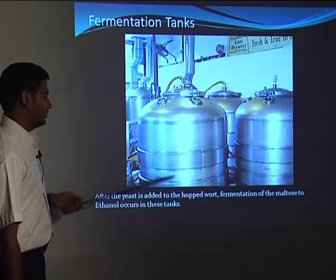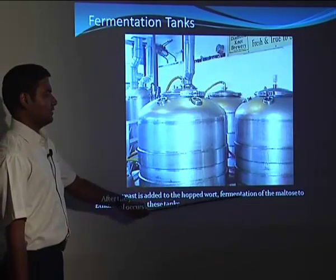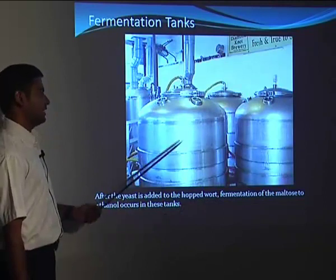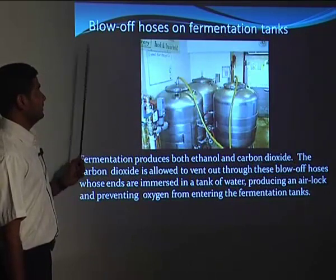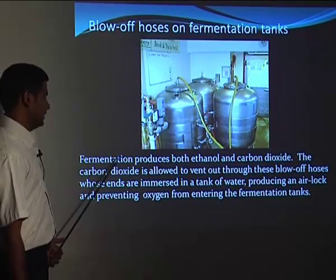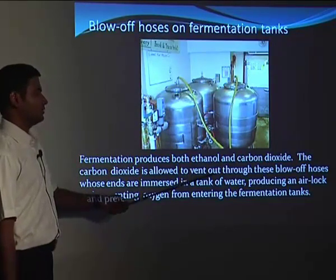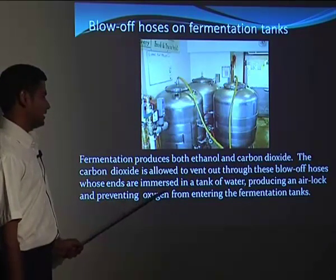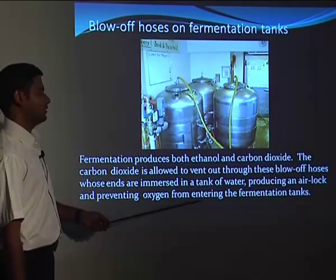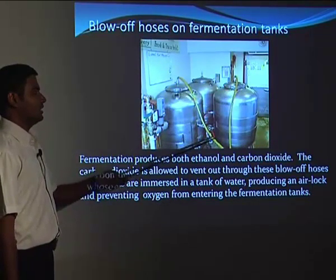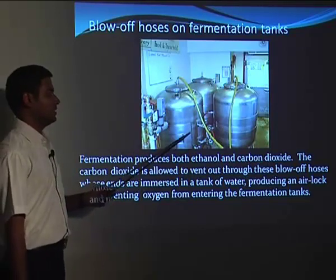In the fermentation tank, yeast is added as the fermenting agent. After yeast is added to the hopped wort, fermentation converts the maltose to ethanol in these tanks. Blow-off tubes on the fermentation tanks allow CO₂ produced during fermentation to vent out. The ends of these tubes are immersed in a tank of water, creating an air lock and preventing oxygen from entering the fermentation tank, as the reaction is anaerobic.